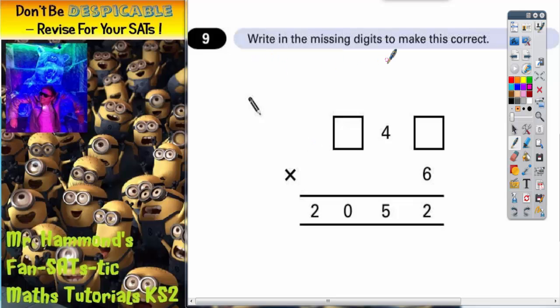Question 9, write in the missing digits to make this correct. So we've got some amount of hundreds plus four tens plus some amount of units, times all that by 6, and you get 2052.